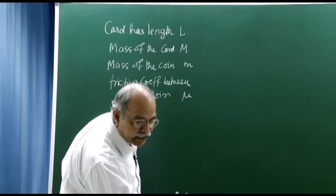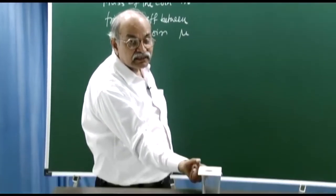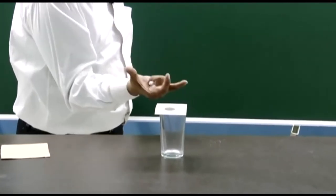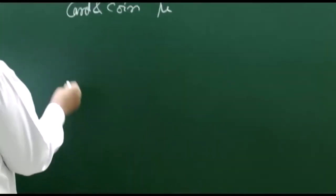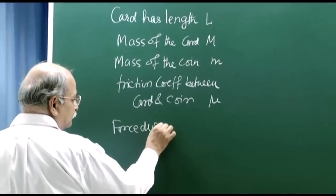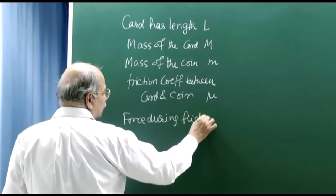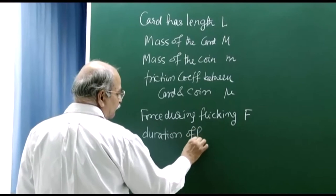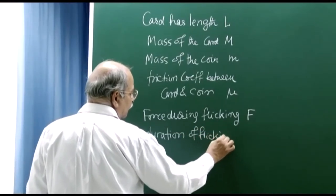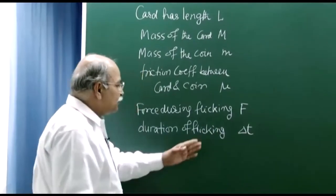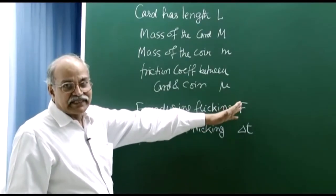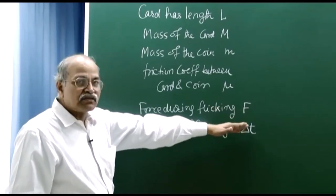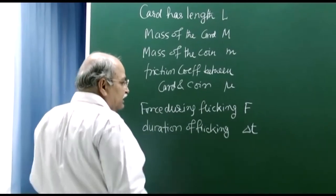Flicking means I exert a horizontal force F on the card for a very short time delta T, and we assume F is constant during this interval. During the flicking, a large force F acts on the card for the short time interval delta T. Now, what are the horizontal forces on the card? First is the applied force F in the forward direction, and then the frictional force due to the coin in the backward direction. Since F is large and delta T is small, we can neglect the friction during flicking.